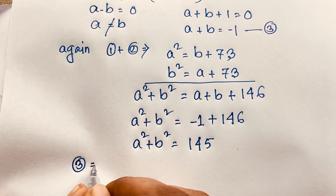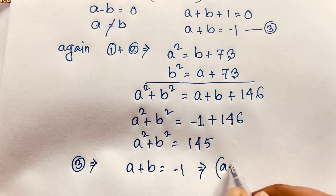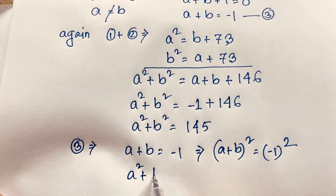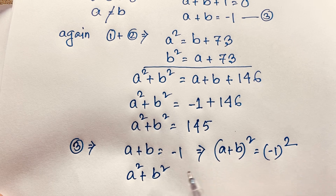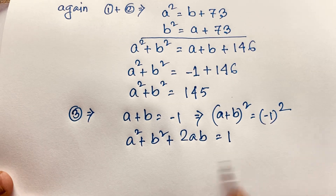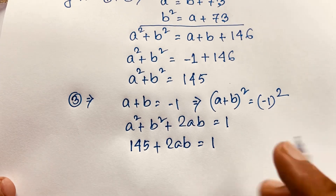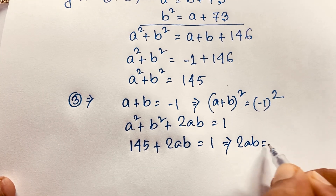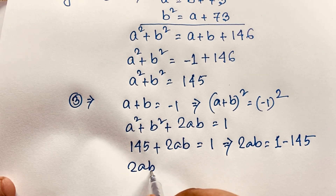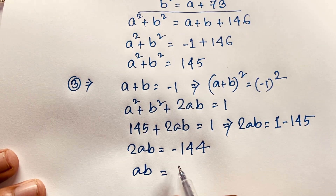Now I use our third equation, a plus b equals negative 1. I square both sides: (a+b)² equals (−1)² equals 1. Expanding: a squared plus 2ab plus b squared equals 1. Since a squared plus b squared equals 145, substituting gives 145 plus 2ab equals 1. Therefore 2ab equals 1 minus 145, which is negative 144.